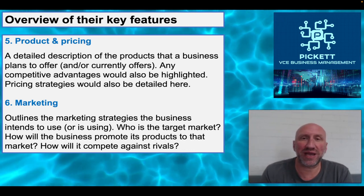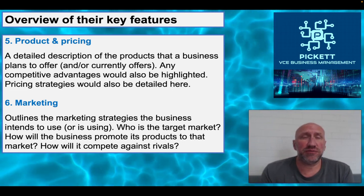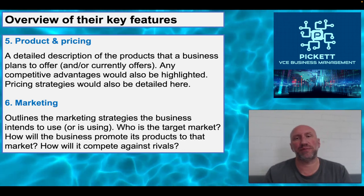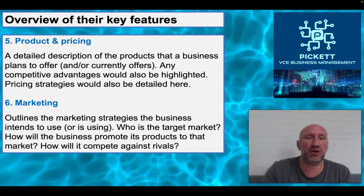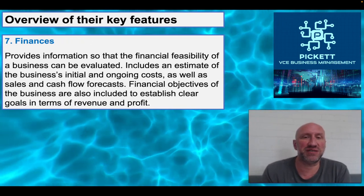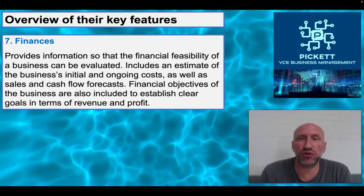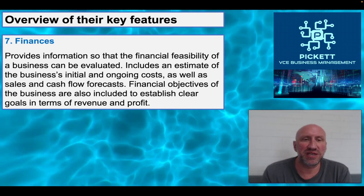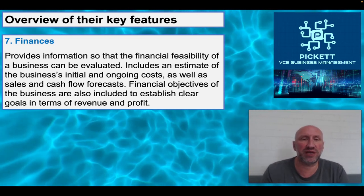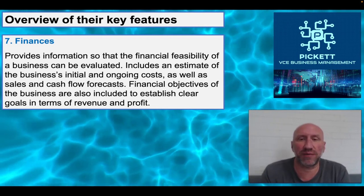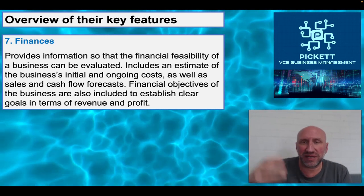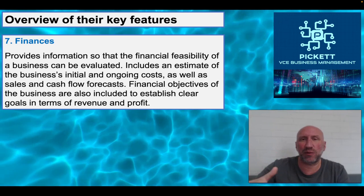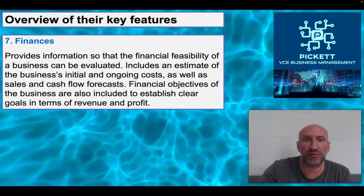Fifth, marketing, which we also look at in Unit 2. Here we outline the marketing strategies we're going to use, who our target market is, how we're going to promote our products, and how we're going to compete against existing or potential competitors in the market. Sixth, finances — this is where investors or lenders are going to look for financial feasibility: an estimate of initial and ongoing costs, sales and cash flow forecasts, and financial objectives, all to establish clear goals around achieving the revenue and profit we're aiming for.